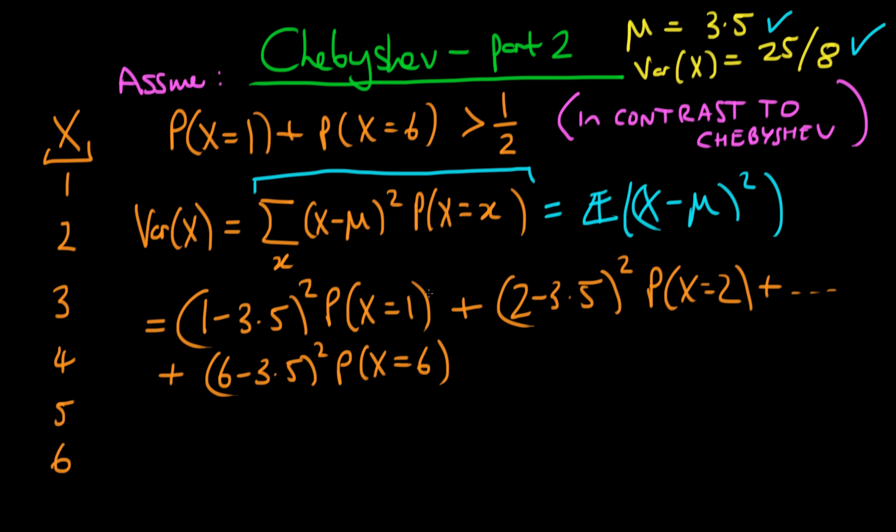Okay, so even though we haven't specified these individual probabilities, we can say something about the variance of x. We can say something because of the fact that we know that probabilities are constrained to be between 0 and 1. So all these intermediate probabilities, the probability that x equals 2 through to the probability that x equals 5, we know that they have to be greater than or equal to 0.